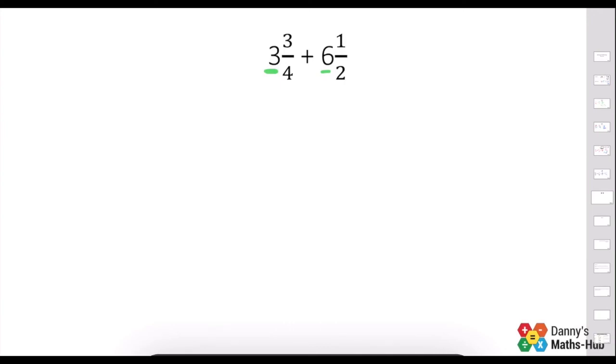I personally just prefer to make them into improper fractions first. It does mean we involve a few bigger numbers, but by the end, I think it makes it a lot easier. So, let's turn this into an improper fraction. 3 times 4 is 12. Add the 3. It's 15 over 4.